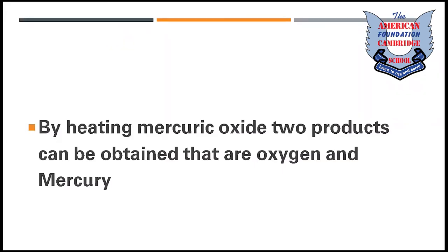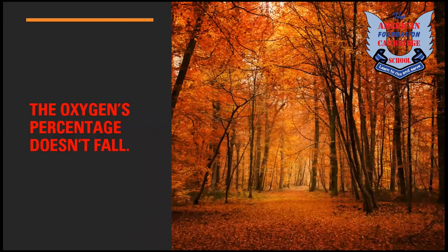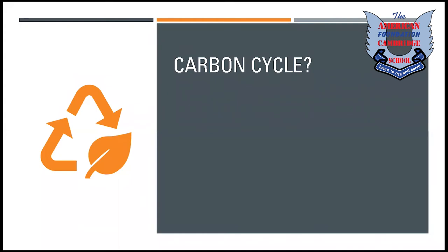By heating mercuric oxide, two products can be obtained: oxygen and mercury — keep this in mind. The oxygen percentage does not fall over long periods of time since life began. This means that the carbon dioxide exhaled by humans gets used up by plants for photosynthesis and is also absorbed by the oceans. Due to this, the oxygen percentage does not fall.